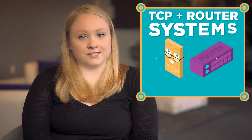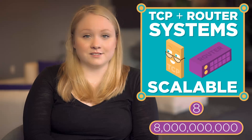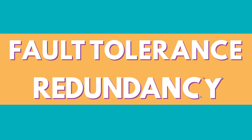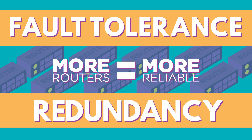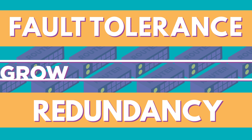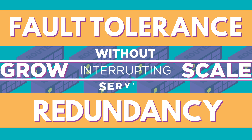What's great about the TCP and router systems is they're scalable. They can work with eight devices or eight billion devices. In fact, because of these principles of fault tolerance and redundancy, the more routers we add, the more reliable the internet becomes. What's also great is we can grow and scale the internet without interrupting service for anybody using it.